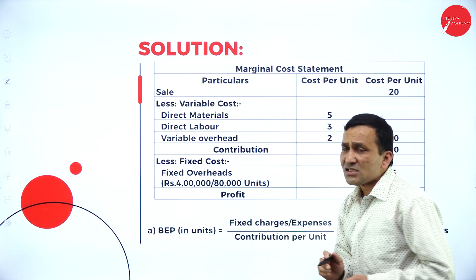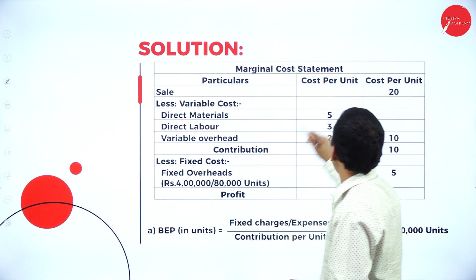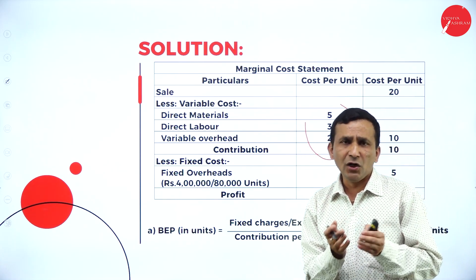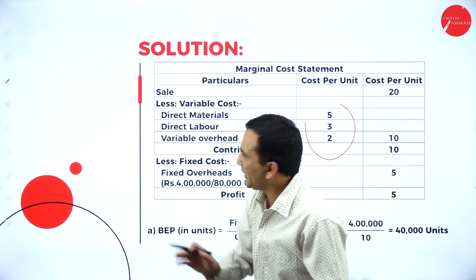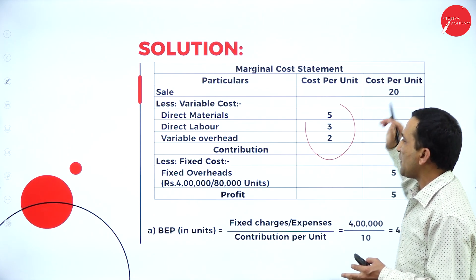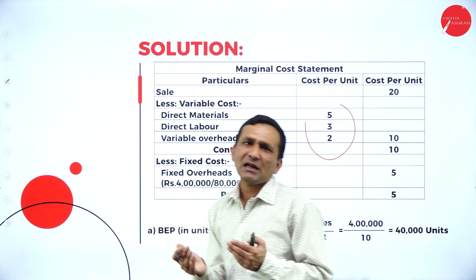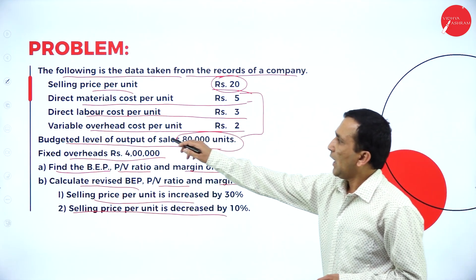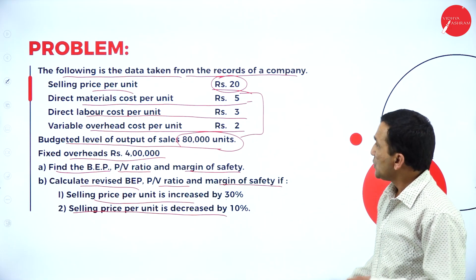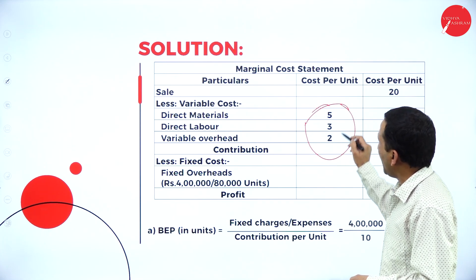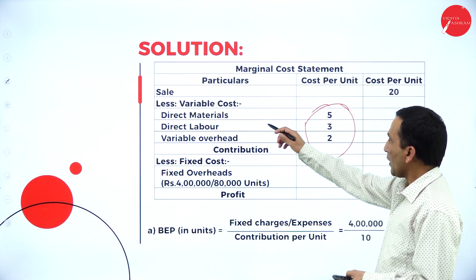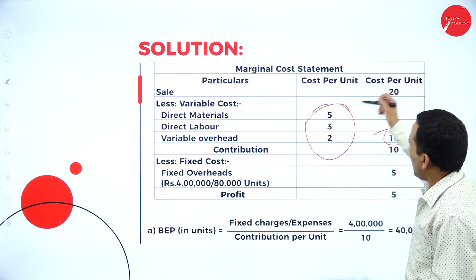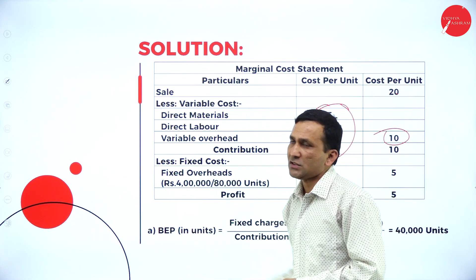Now we prepare the marginal cost statement. Sales per unit is ₹20. Since there is no sales return, we write it directly. Under variable cost: direct material is ₹5, direct labor is ₹3, and variable overhead is ₹2. If we write more than one item, we use the inner column. The total variable cost per unit comes to ₹10.